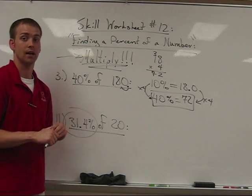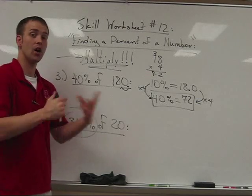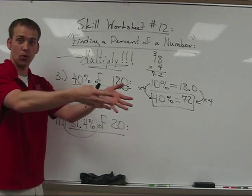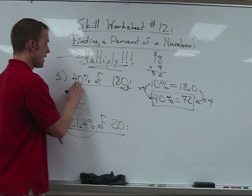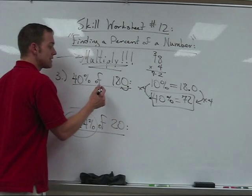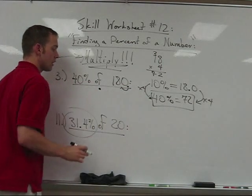'Of' means multiply. Let's say I have two of four. That means four and four together. That means I have eight. In other words, two times four is eight. So looking at this, I want to take 40% times 180.